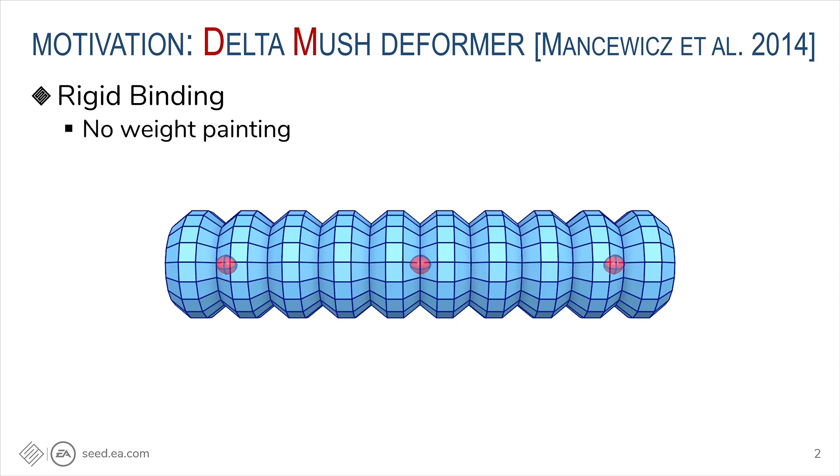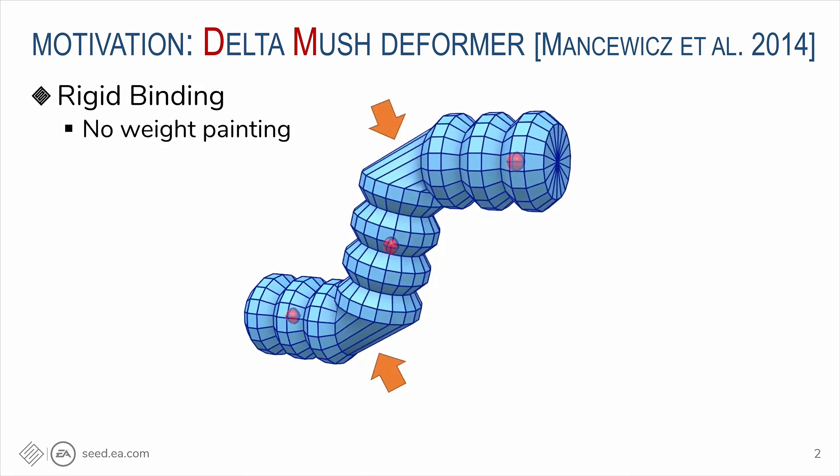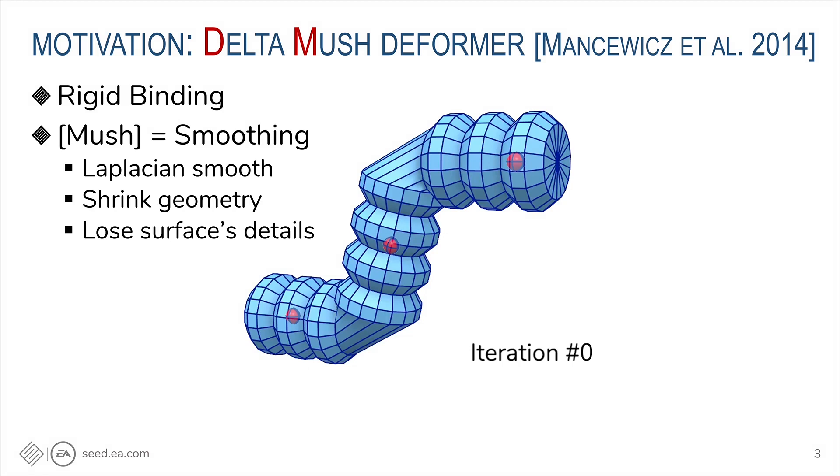For example, if we have three joints, drawing red color here, and we just do the rigid bind, the geometry will break when we animate the joints. To fix this, DeltaMush uses Laplacian smoothing, or mushing, as named by the original authors.